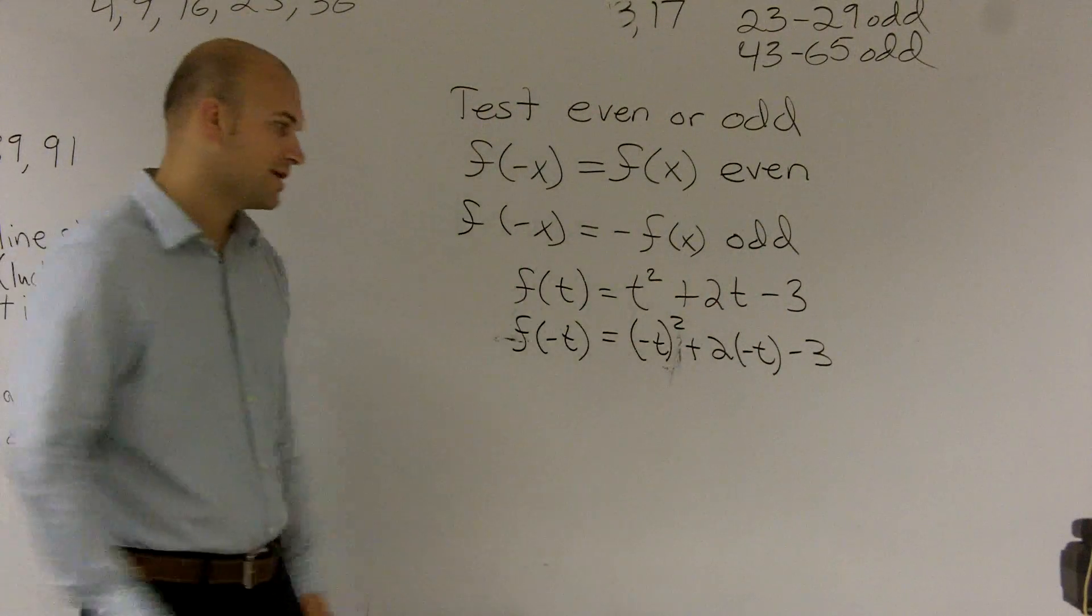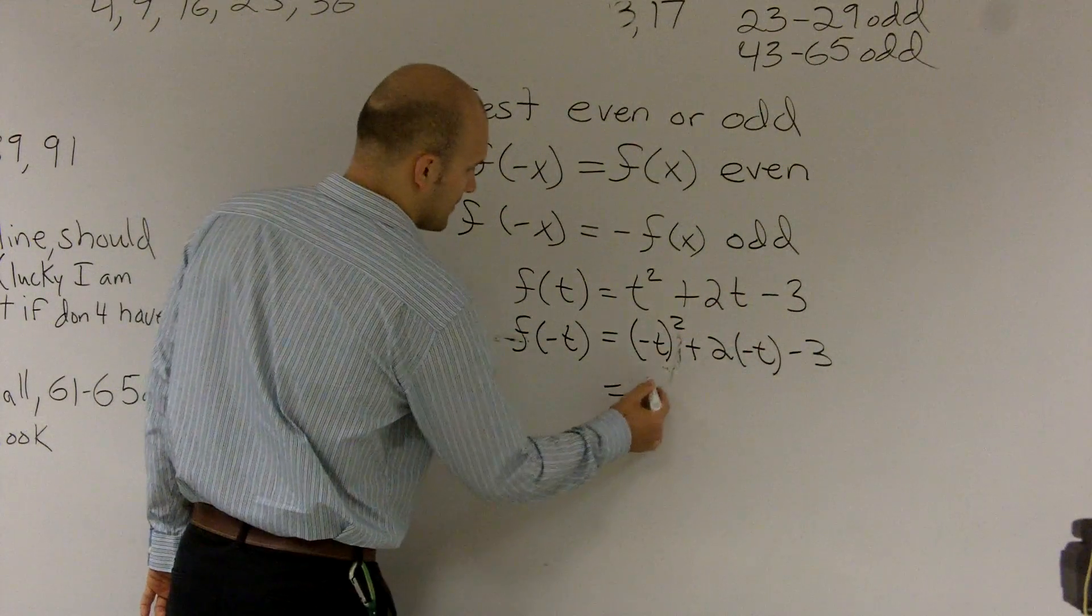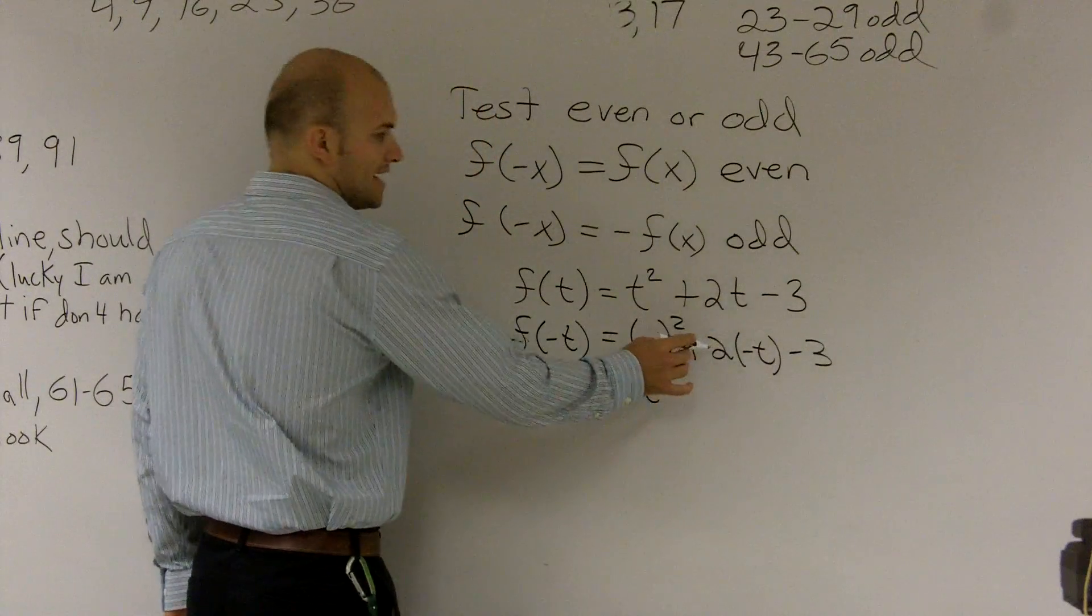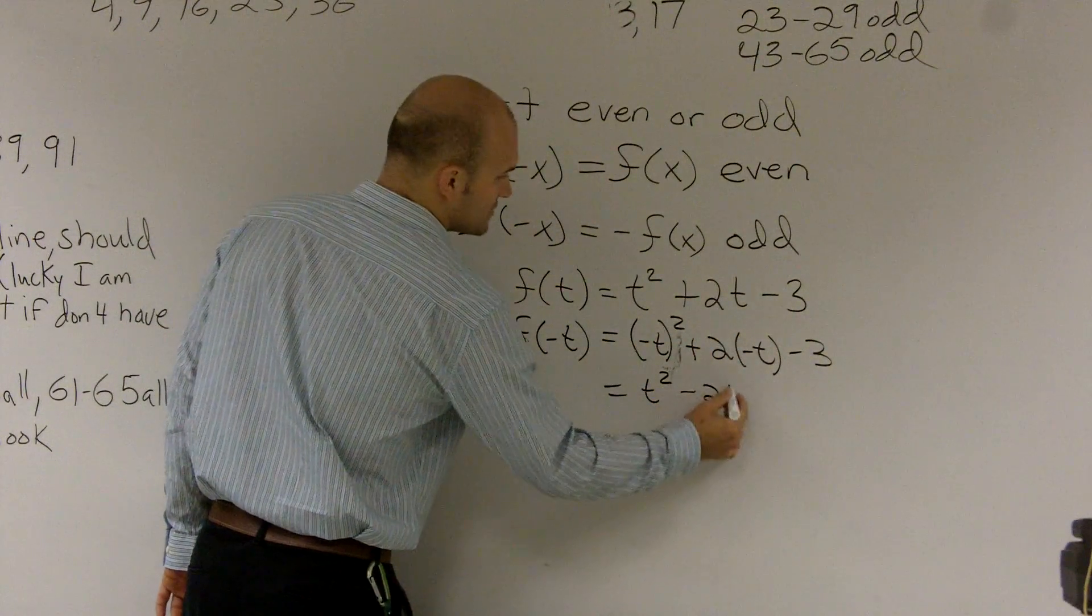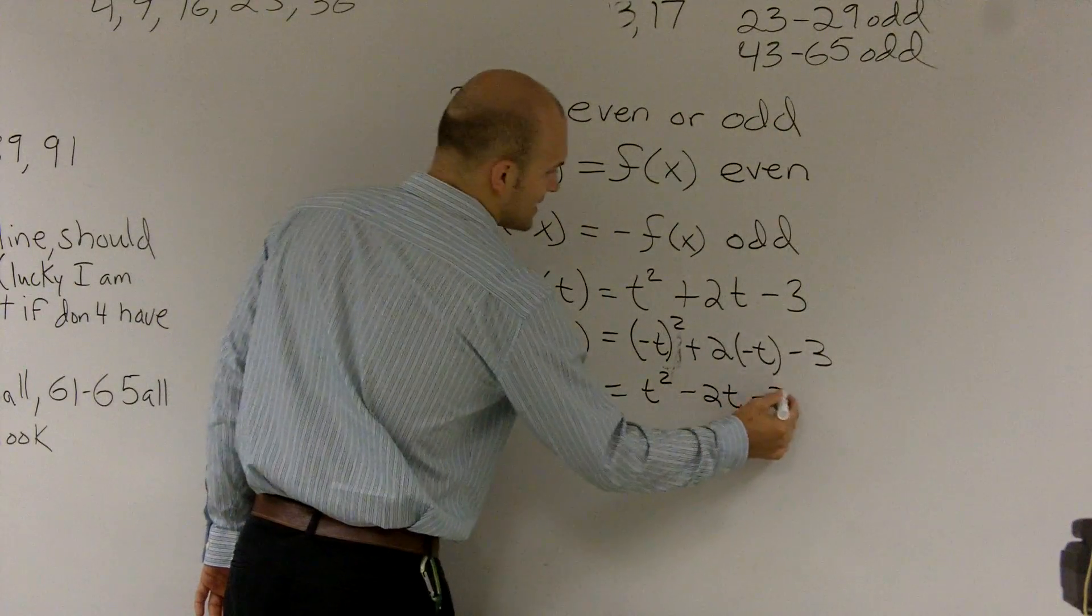So obviously, if we know any negative number squared, that's going to be positive. Negative t times 2 is now going to become a negative 2t. And then we'll have minus 3.